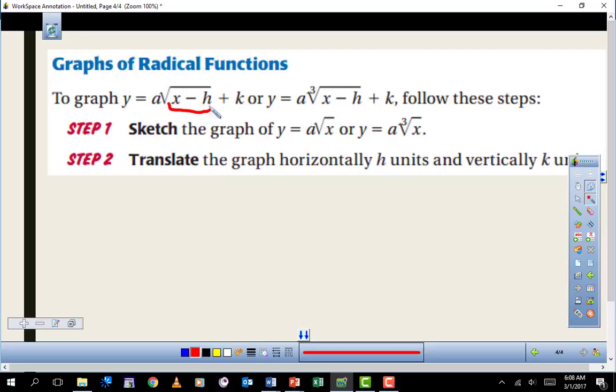This portion right here is what causes a horizontal shift. The shift will either be to the left or to the right. There's a secret that I've always used to find out which way it goes. What I do is I just take this part that's inside the square root or inside the cube root and I set that part equal to 0.